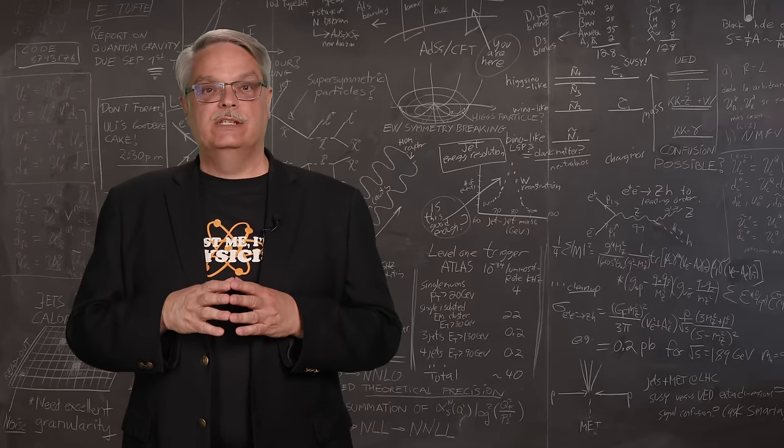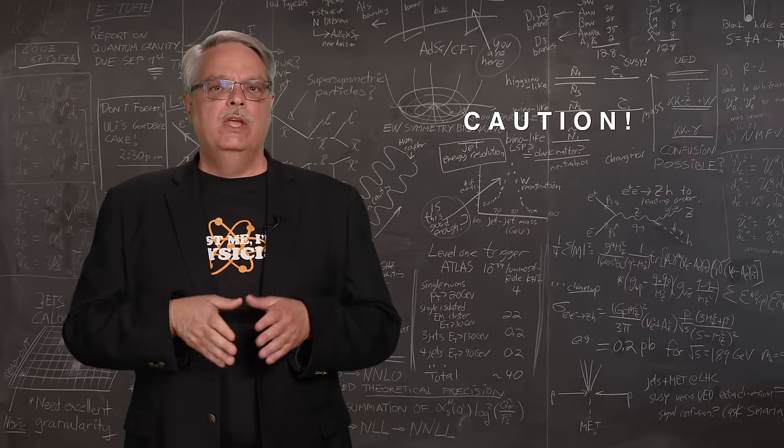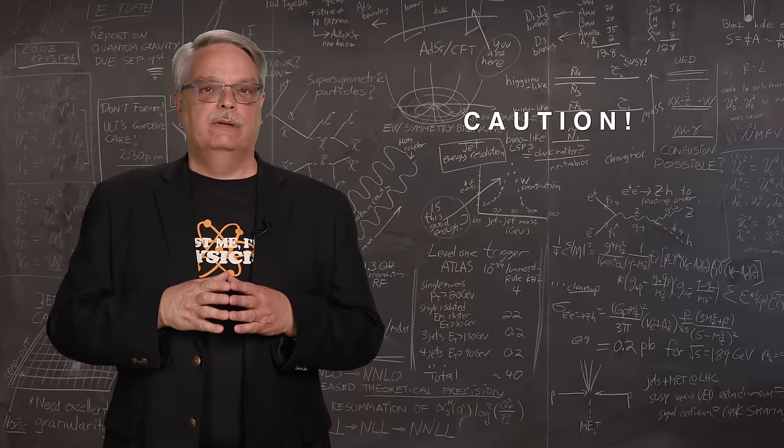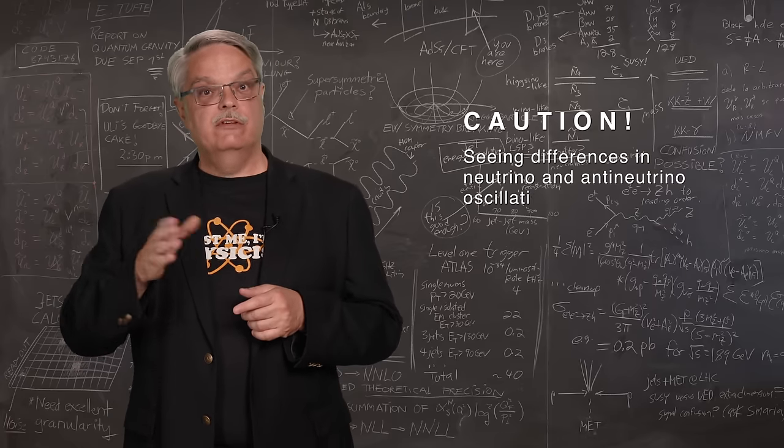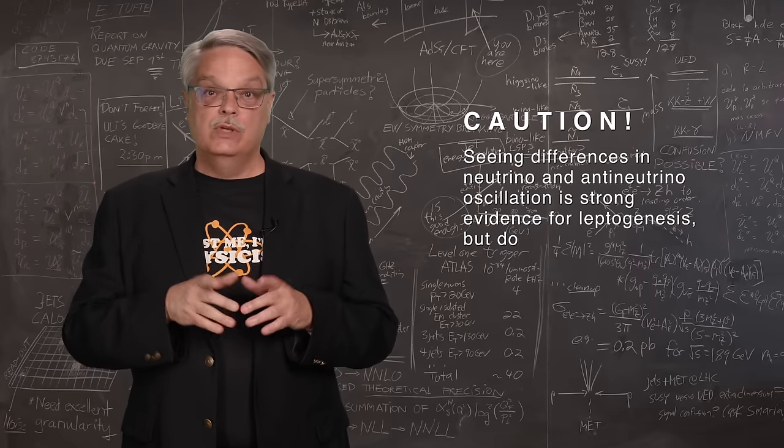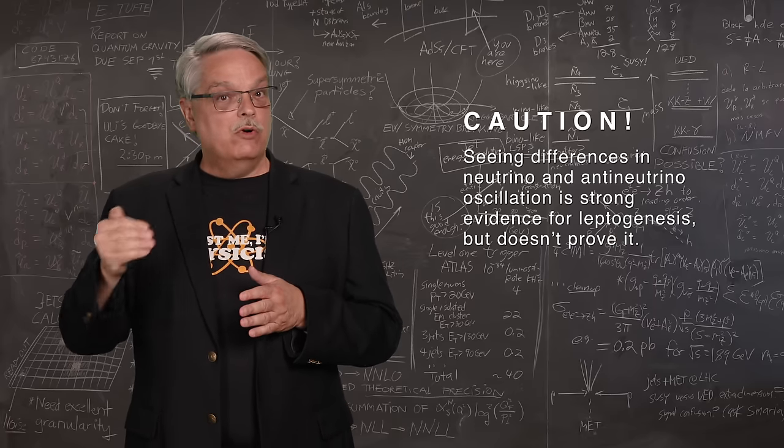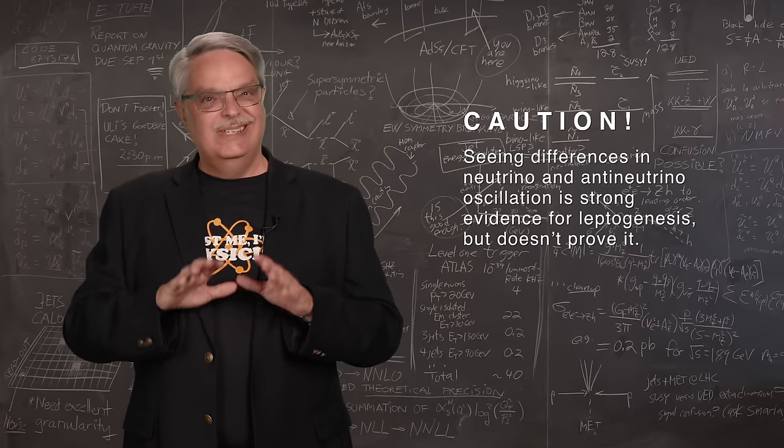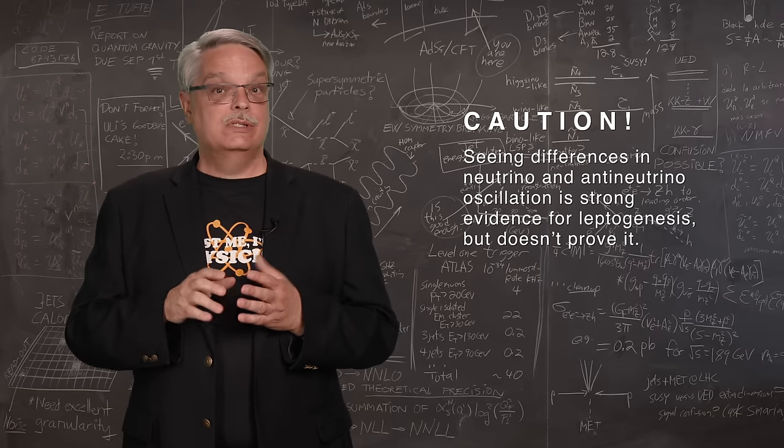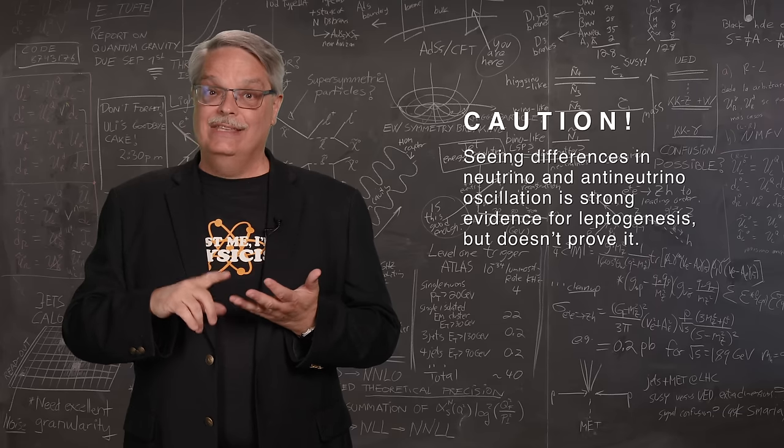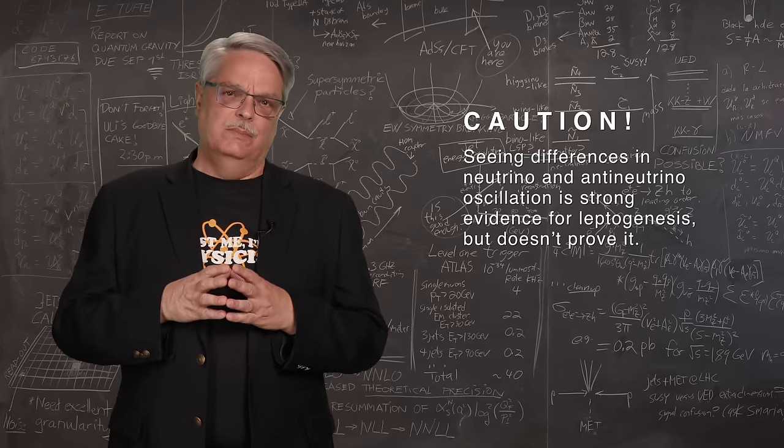If they're different, this whole leptogenesis thing could be true. Now some caution is in order. We have to be careful about the logic. If leptogenesis is true, we should see differences in the morphing behavior of neutrinos and antimatter neutrinos. But the converse is not necessarily true. Seeing those differences in the morphing of neutrinos and antineutrinos doesn't mean that leptogenesis is true. After all, we still need to establish that right-handed neutrinos exist and that neutrinos are their own antimatter particle. So there'll still be some work to do.